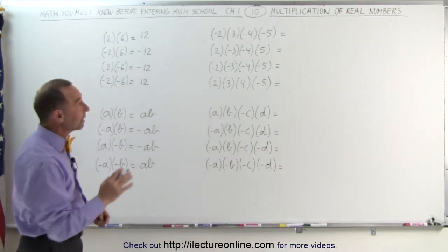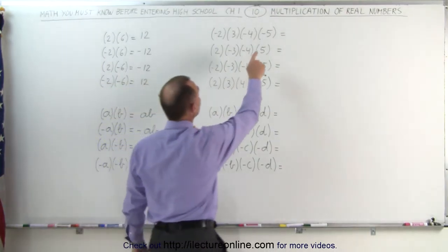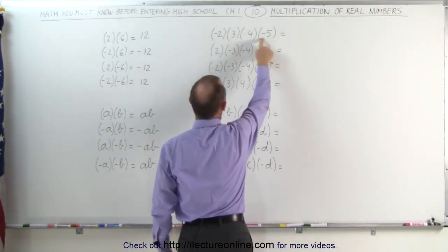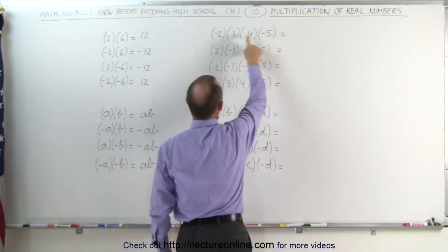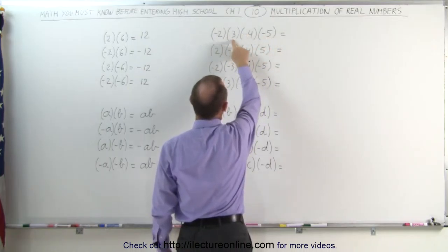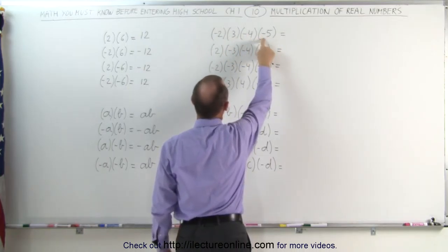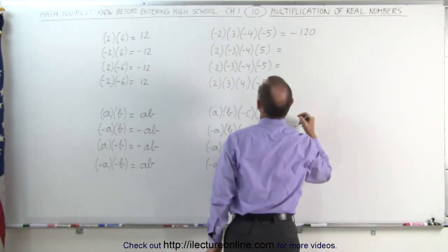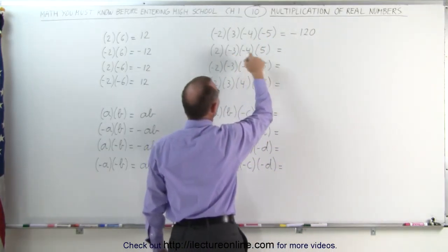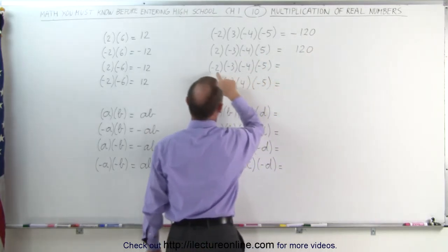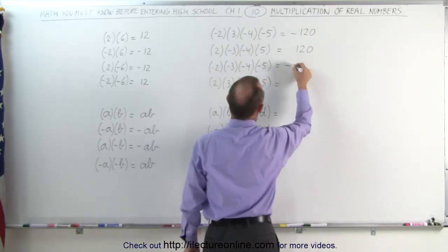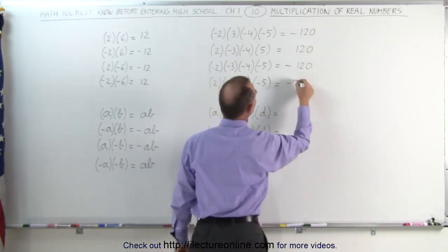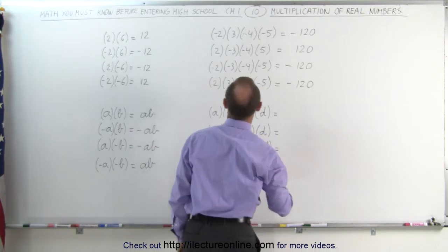Now let's take a look at this — now we have four numbers. Notice on the first one here we have three negatives. When the number of negatives is odd — in this case three is an odd number — we multiply 2 times 3 times 4 times 5, which is 120. Three negatives means negative 120. If two of them are negative that makes it positive 120. If three of them are negative, negative 120. And if one is negative, again negative 120.